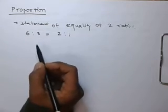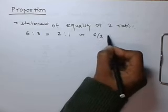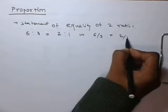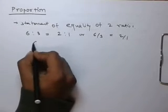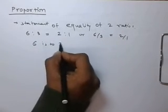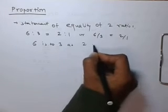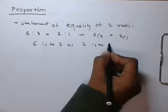We can also write this in this manner: 6 by 3 equals to 2 by 1, and can be expressed as 6 is to 3 as 2 is to 1.